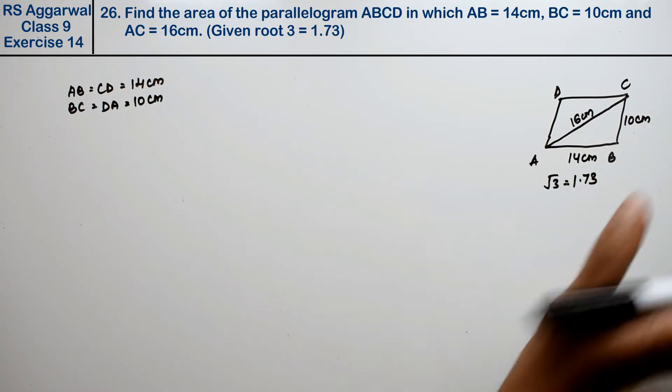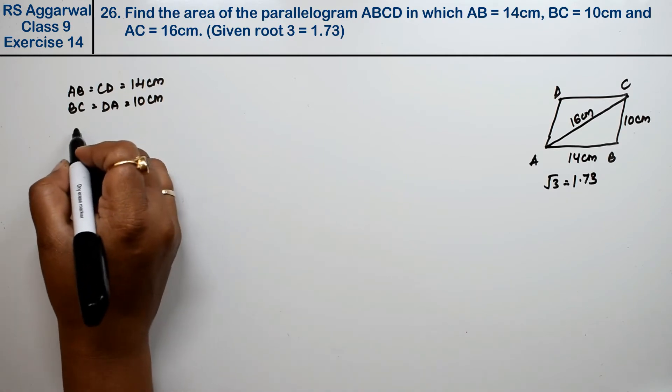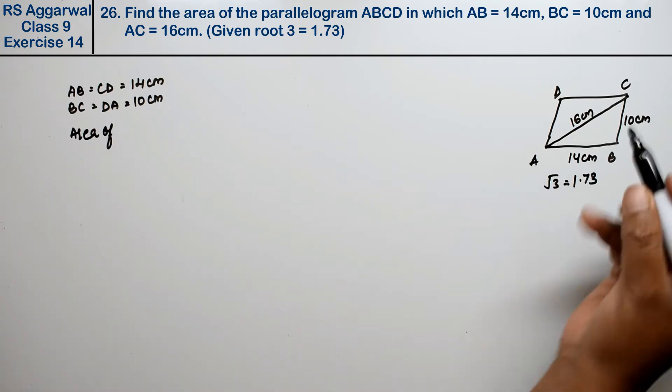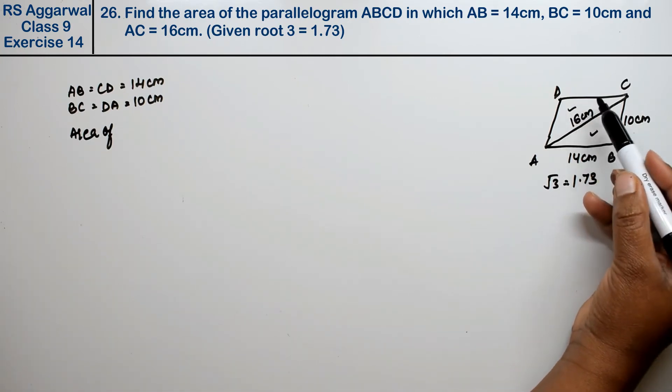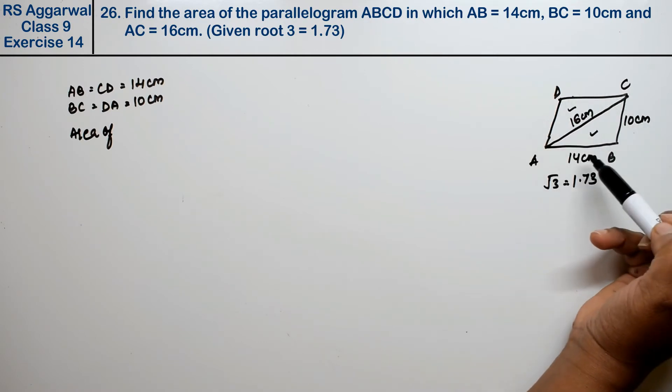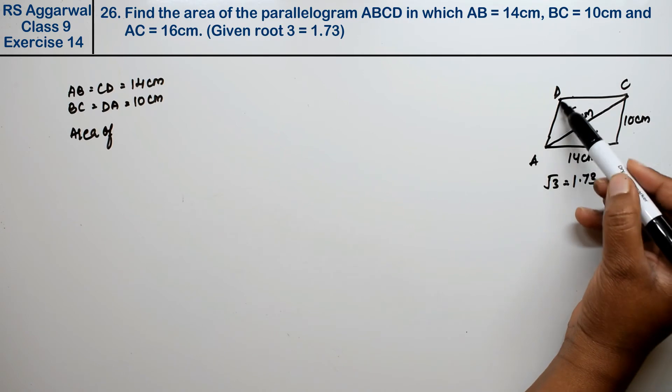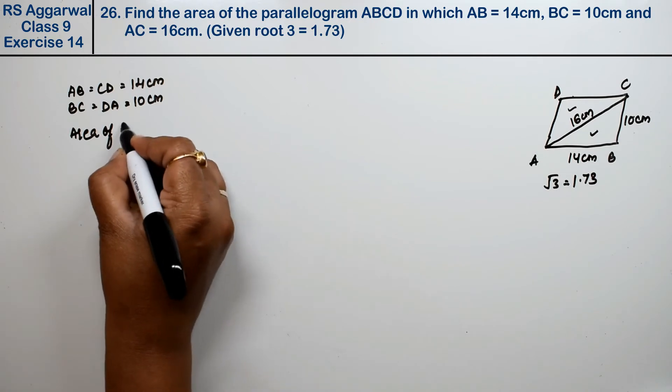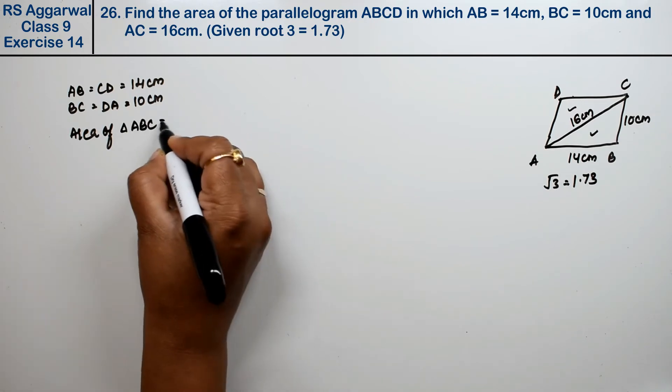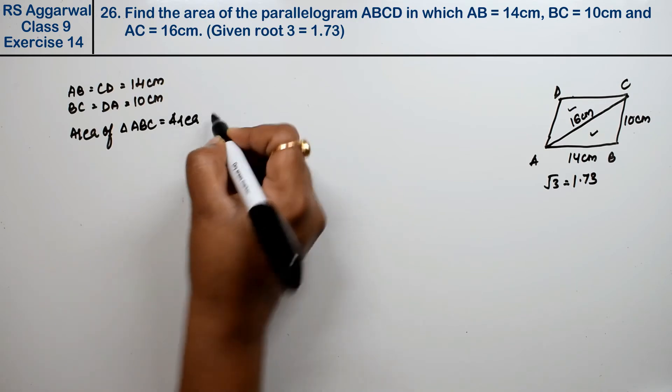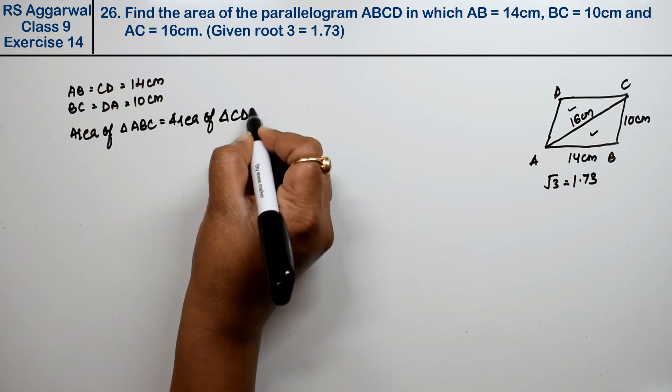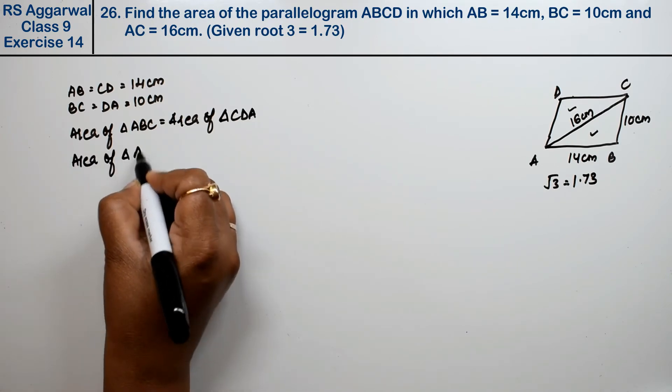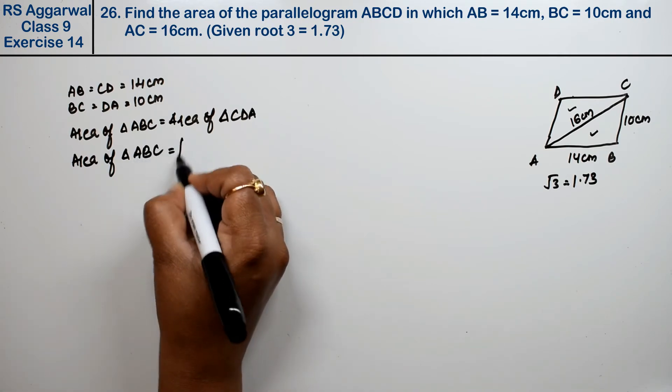We have no right angle and the triangle is not equilateral, so we have to find the area of the triangle. This triangle and this triangle are equal because this side and this side are equal. This triangle may be 14, 10, and 16, and this side may be 14, 10. So area of triangle ABC is equal to area of triangle CDA.